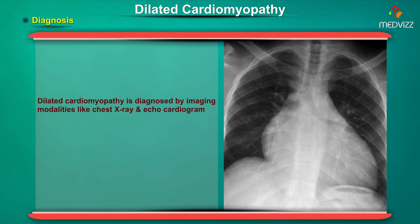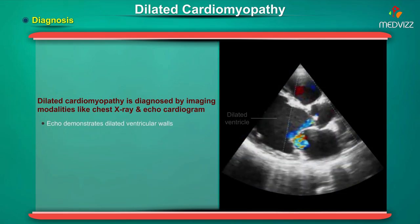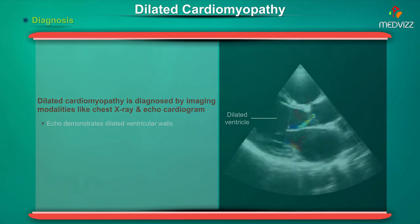Dilated cardiomyopathy is diagnosed by imaging modalities like chest x-ray and echocardiogram. On chest x-ray, a dilated water-bottle-shaped heart and pleural effusion can be seen. Kerley type B lines can also be seen if pulmonary edema is present. Echocardiogram demonstrates dilated ventricular chambers.